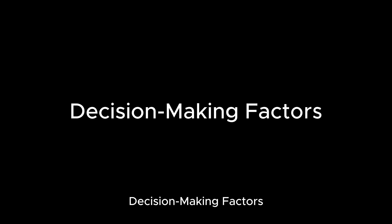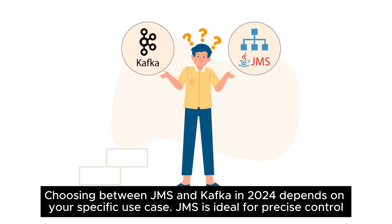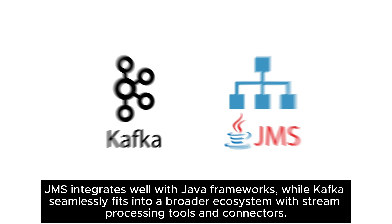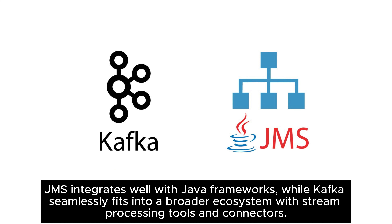Choosing between JMS and Kafka in 2024 depends on your specific use case. JMS is ideal for precise control over message ordering, while Kafka shines for real-time data streaming, event-driven architecture, and horizontal scaling of large data. JMS integrates well with Java frameworks, while Kafka seamlessly fits into a broader ecosystem with stream processing tools and connectors.